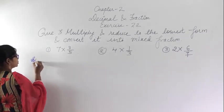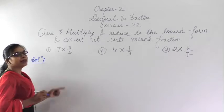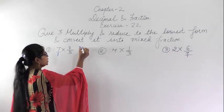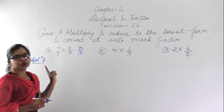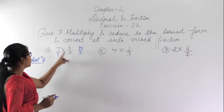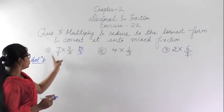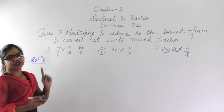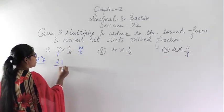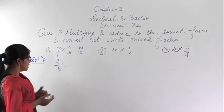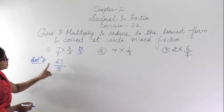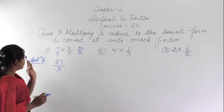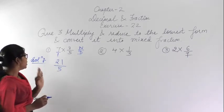Here you have to multiply, so I can write down 1 to convert this into a fraction. You multiply numerator by numerator and denominator by denominator. If possible you can simplify beforehand, but here we cannot divide, so we multiply: 7 threes are 21, upon 5 into 1 is 5. Can we reduce 21/5 to the lowest form? No, because neither 21 nor 5 appear in each other's multiplication tables.